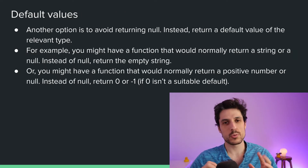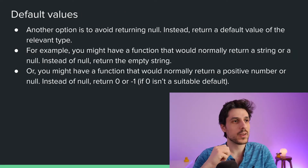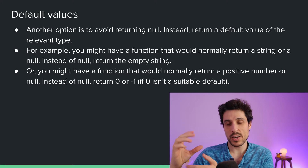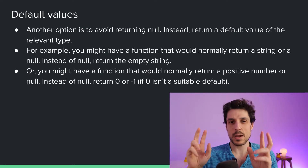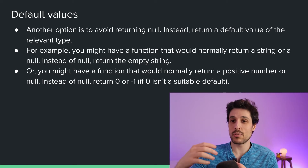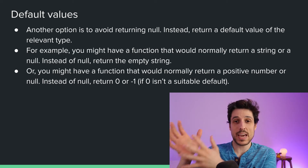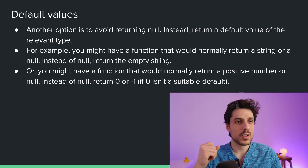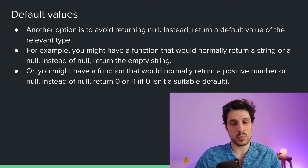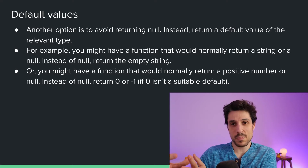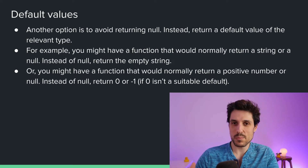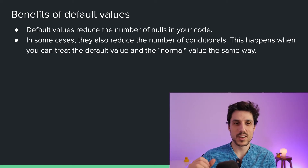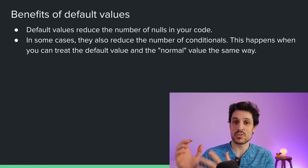Another thing you can do is return a default value instead of returning null. If you have a function that normally returns a string, the default value might be an empty string, or a default string like the name "guest" instead of the person's actual name if it's not filled in. Or if it normally returns a number, the default value might be 0, or minus 1 if 0 is a legitimate value. The benefits are that it reduces the number of nulls in your code base and reduces the number of conditionals and null checks you need.